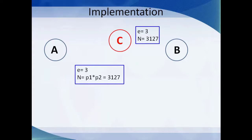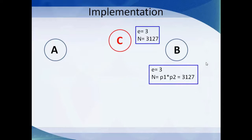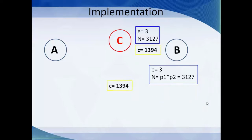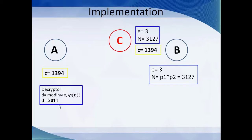C the intruder may also track down e and n. At B's side there is a message m = 'HI'. Using the encoding a=1, b=2, etc., 'HI' = 89. We use the encryption formula C = m^e mod n = 89^3 mod 3127, which gives 1394. This encrypted value 1394 is transmitted to A. At A's side, we use the decryptor formula d = mod_inverse(e, φ(n)) = mod_inverse(3, 3016), which gives d = 2011.